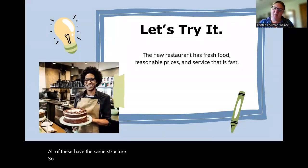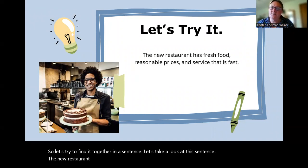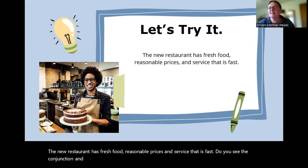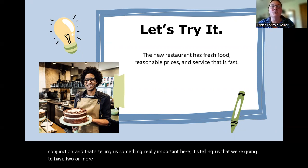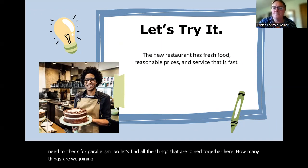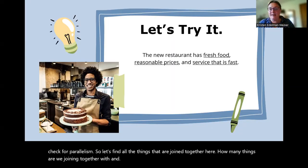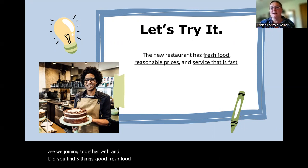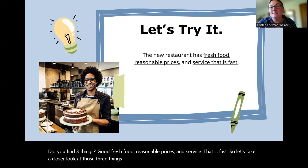So let's try to find it together in a sentence. Let's take a look at this sentence: 'The new restaurant has fresh food, reasonable prices, and service that is fast.' Do you see the conjunction 'and'? That's telling us something really important here. It's telling us that we're going to have two or more things that we are joining together, and it's also the signal that we need to check for parallelism. So let's find all the things that are joined together here. How many things are we joining together with 'and'? Did you find three things? Good. Fresh food, reasonable prices, and service that is fast.